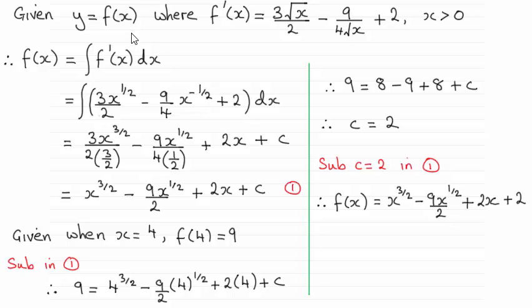Given the condition that when x equaled 4, y equaled 9. And you can see the answer here is that f of x equals x to the power 3 over 2 minus 9x to the power half over 2 plus 2x plus 2.